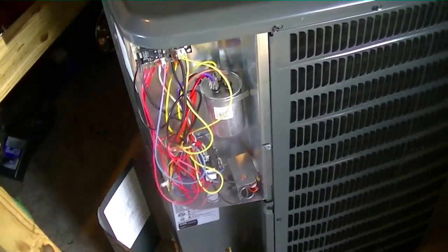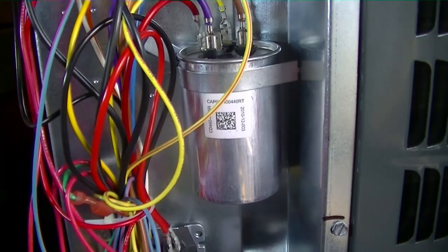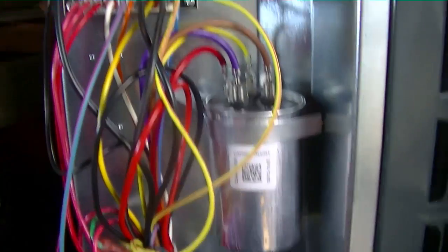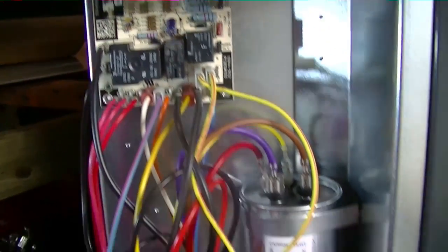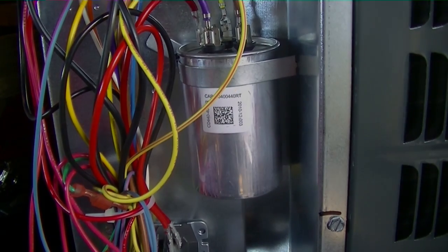Next time we'll look at a few other things, maybe a blower capacitor. But for this time, we're just looking at the dual run capacitor in a heat pump. Same function for an air conditioner, except you wouldn't have the defrost control board interrupting the common wire for the fan motor. I'll see you guys on the next one.